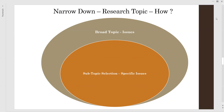The subtopic selection should involve a current topic that is arguable or debatable, where we can have opinions. It must also be researchable, doable, and manageable. When you take the subtopic selection, specific issues within the subtopic will arise.